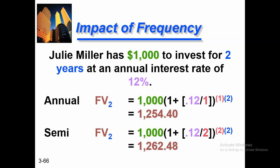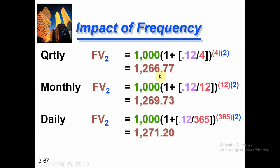Now let's observe how compounding can increase total return. If Julie Miller's investment is compounded semi-annually, M equals 2, and the future value becomes $1,262 — an increase of about $8. With quarterly compounding the return increases to $1,266; with monthly compounding it becomes $1,269; and with daily compounding it reaches $1,271. Frequency of compounding increases your return on investment.